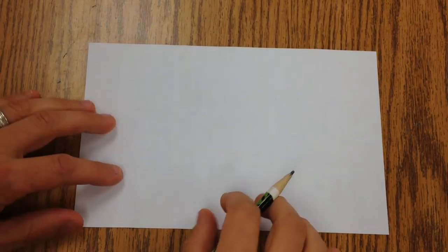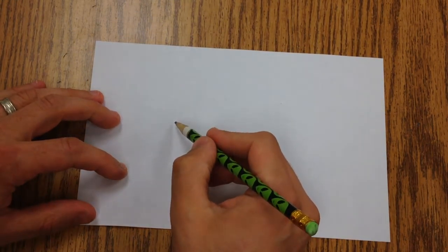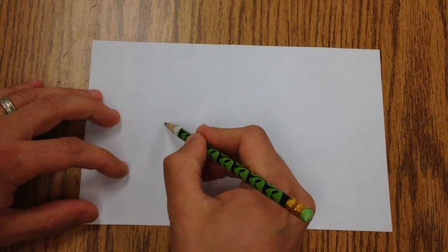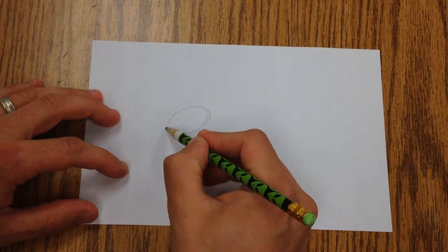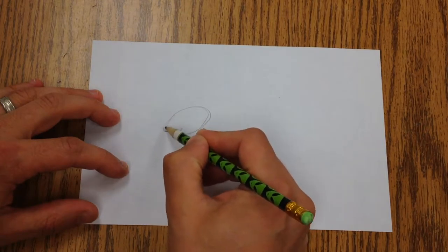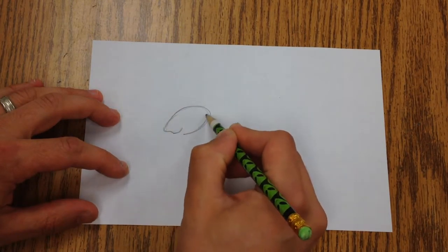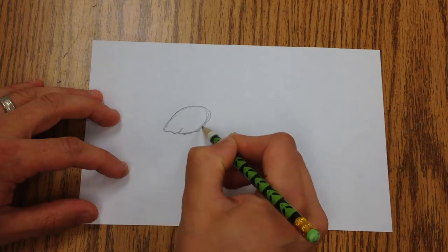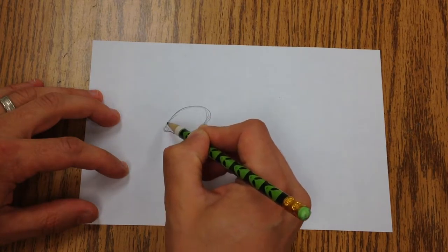So first we're going to start with the head and I'm going to create a little oval that points at the end and this is going to be where the mouth goes. And I'm going to put a little nose right there on the end.